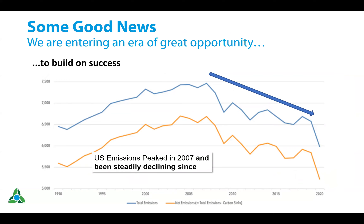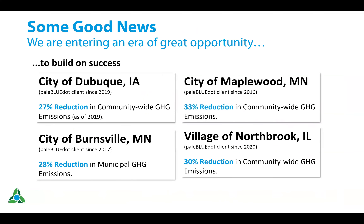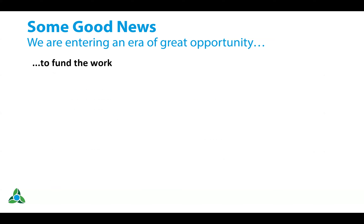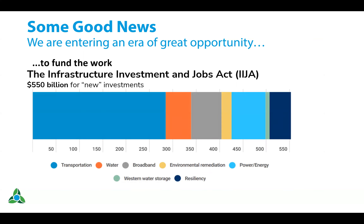I believe we're entering an era of great opportunity. Not everybody realizes that US emissions peaked 15 years ago — they peaked in 2007 and have been on a pretty steady decline ever since, which is fantastic news. In our little corner of the world, communities we have worked with — here are four examples of measured GHG reductions. Three of them have community-wide emissions that are a third lower than when they started their journey. We're just a tiny little firm touching a few communities, but start multiplying that around the country: we are having success. We are moving things forward.